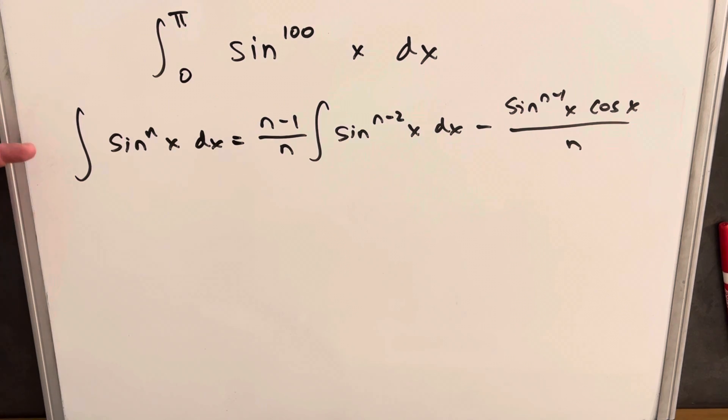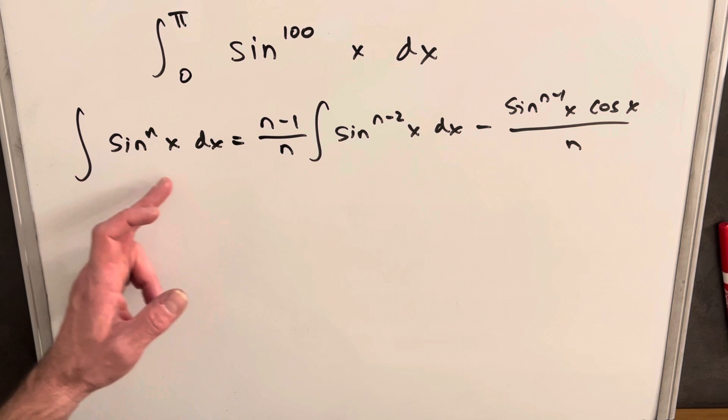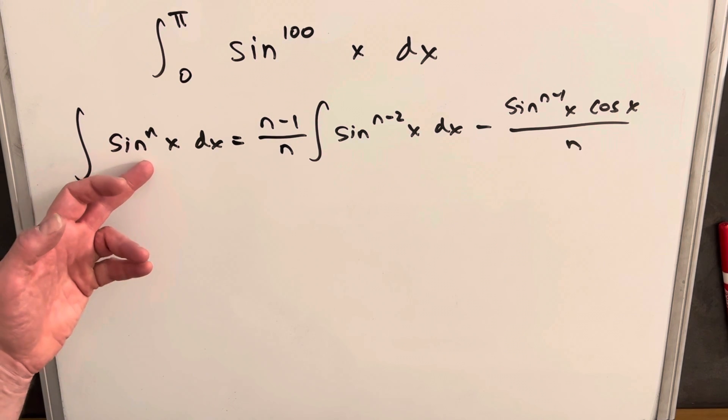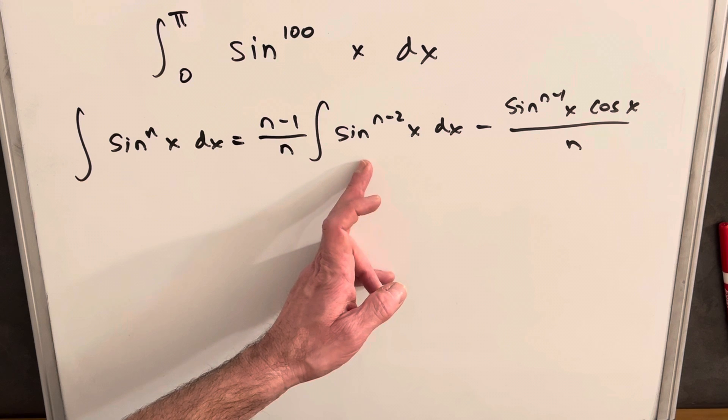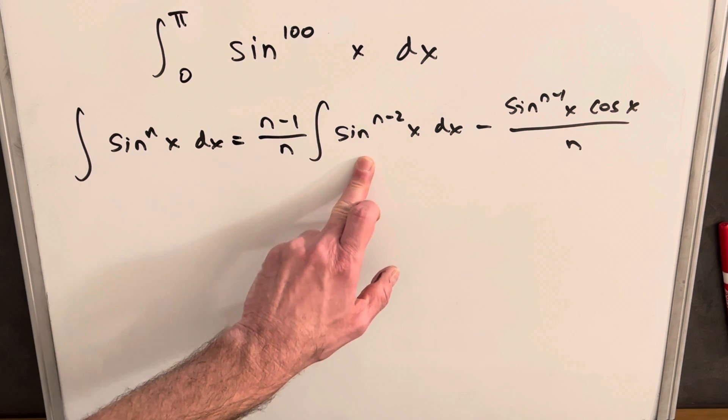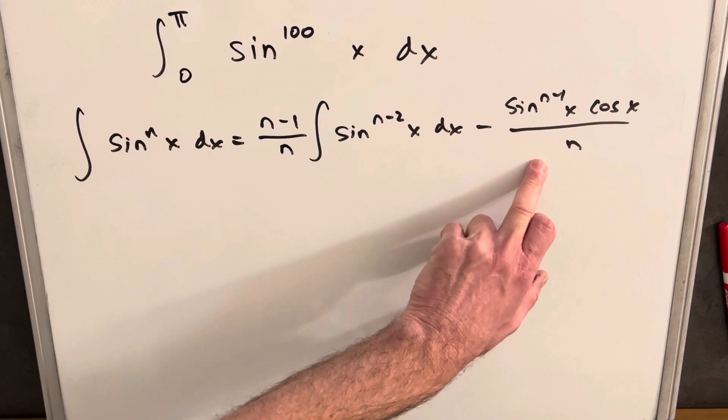Looking at our power reduction formula without having any bounds yet, we notice what this will do for us is we have a large power for n. Then we can reduce this into 2 less, so it's sine to the 100th. We can get this into the form of sine to the 98th with this other piece.